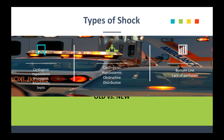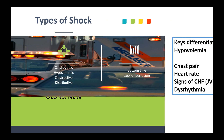Now it's broken down a little cleaner: you've got cardiogenic, you've got hypovolemic, and then instead of the other three, they break them down into either obstructive or distributive. But the bottom line is that all types of shock occur because of that underlying lack of tissue perfusion — things like fluid loss, significant vasodilation, and pump failure, meaning the heart. We'll still mention neurogenic, anaphylactic, and septic as well.